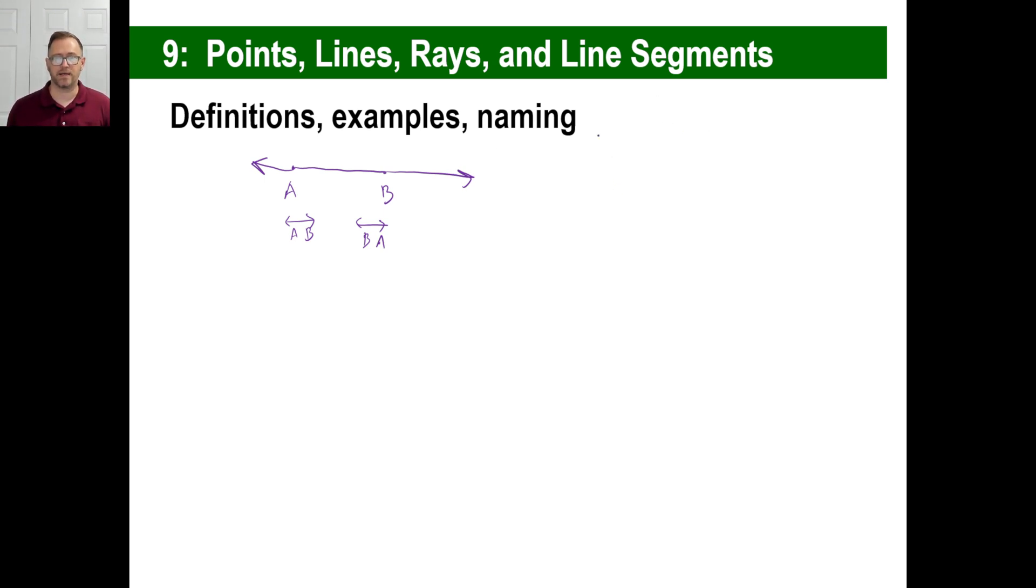A ray would be something like this. It goes this way. You might name it like this, and let's say there's a point here, and then let's say it's X, Y. Well, in this case, you would want to name it X, Y, because it's going infinitely in the Y direction, so you'll see something like this sometimes, like X, Y.